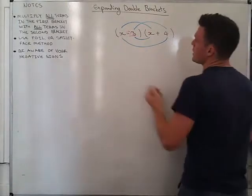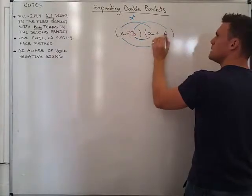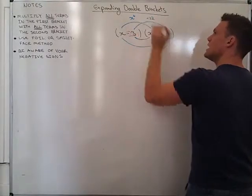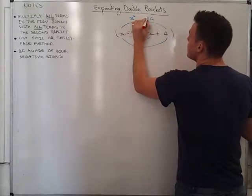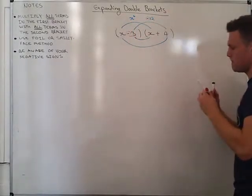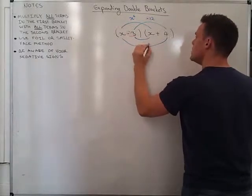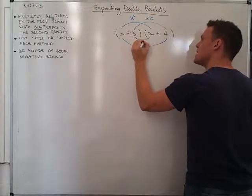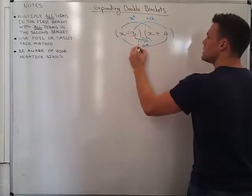Alright, so now I do the exact same thing. x times x gives me x squared. Negative 3 times 4 is not 12, it's negative 12. We've got to be careful of that. We've got to remember our negative signs. Be aware of them. x times 4, that's going to give me 4x. And negative 3 times x, that's going to give me negative 3x.